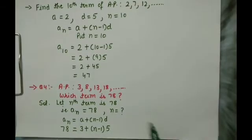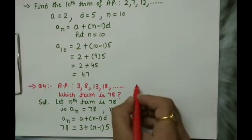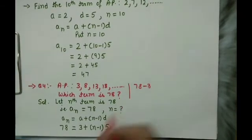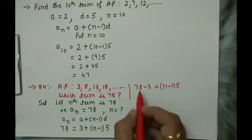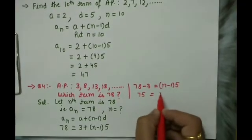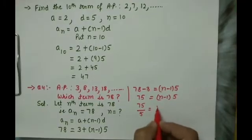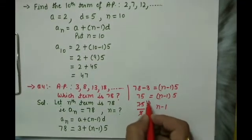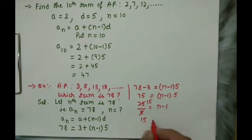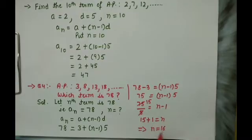Students, check these steps carefully as calculation mistakes are common here. Transposing 3 to the left side: 78 minus 3 equals n minus 1 into 5, giving us 75 equals n minus 1 into 5. Cross multiplying, we shift 5 to the left: 75 divided by 5 equals 15. Then transposing minus 1 to the left gives plus 1, so n equals 15 plus 1 equals 16.